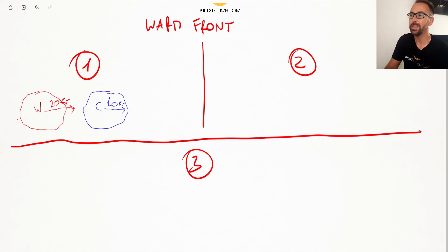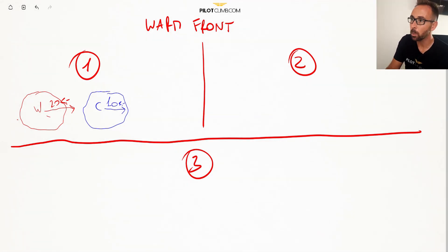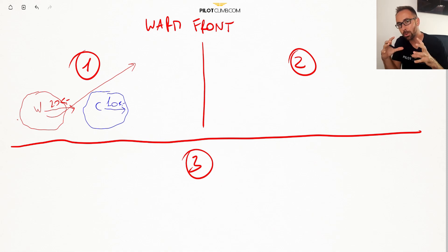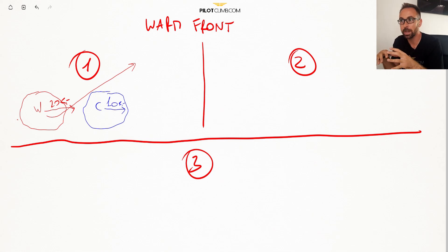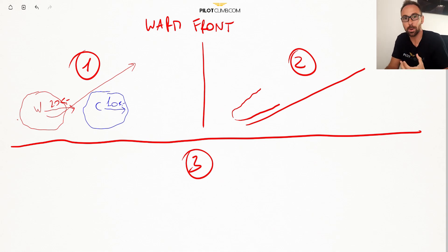There will be a point where these two masses of air reach each other and collide. Since the warm mass of air is less dense, it will start to go on top of the cold mass of air. They don't really mix — one of the two has to climb and the other has to stay low. The cold mass of air, being more dense, stays on the ground, and the warm mass of air starts to slide up over it.